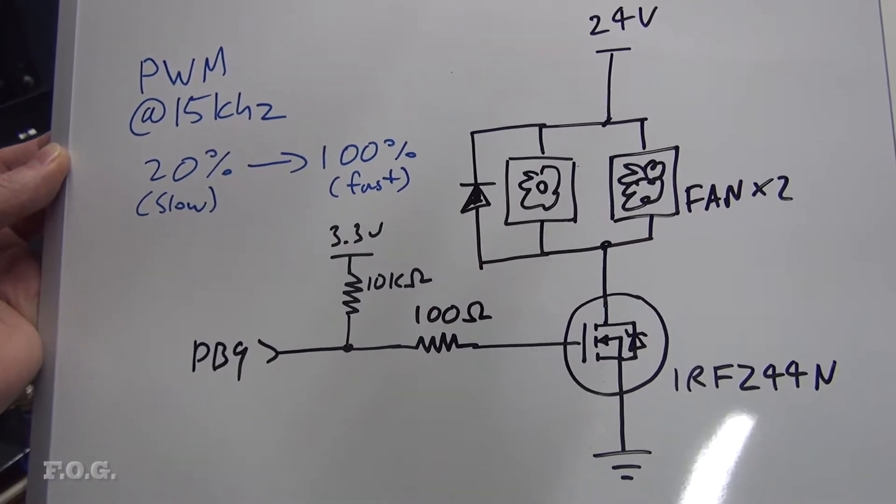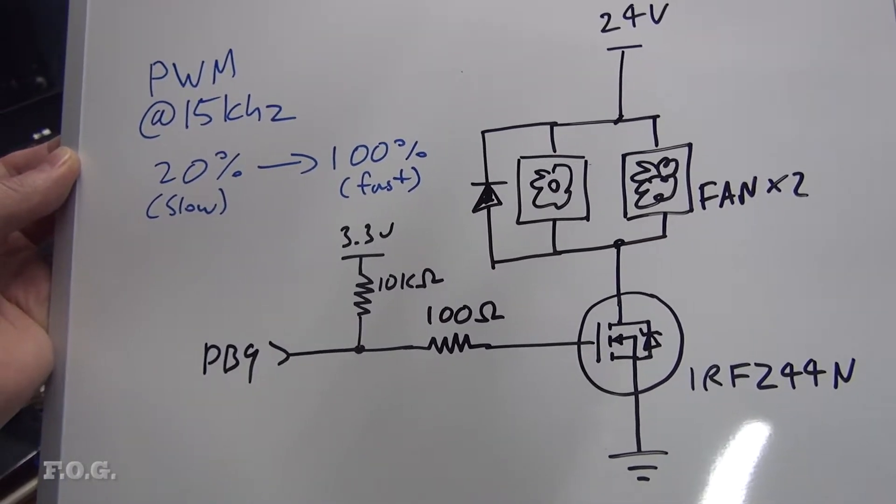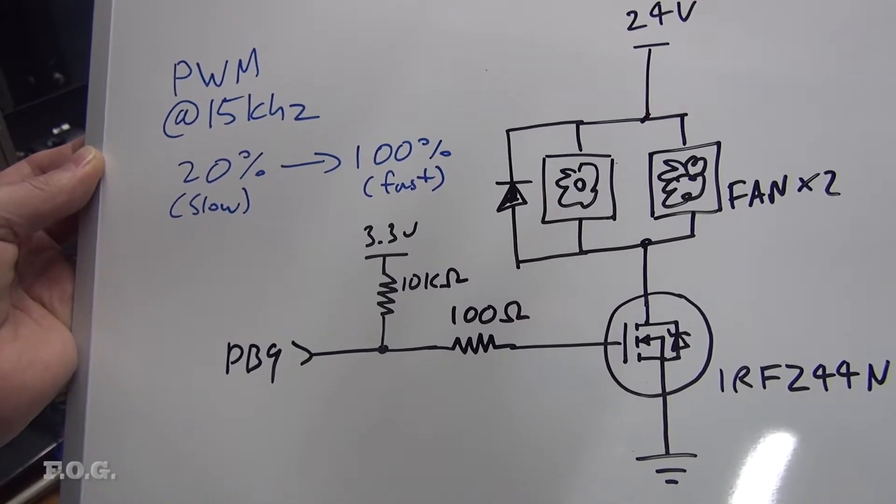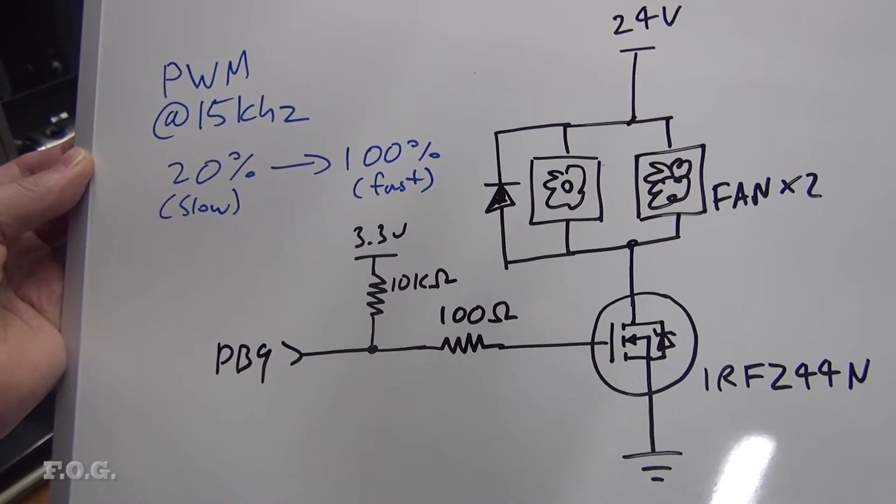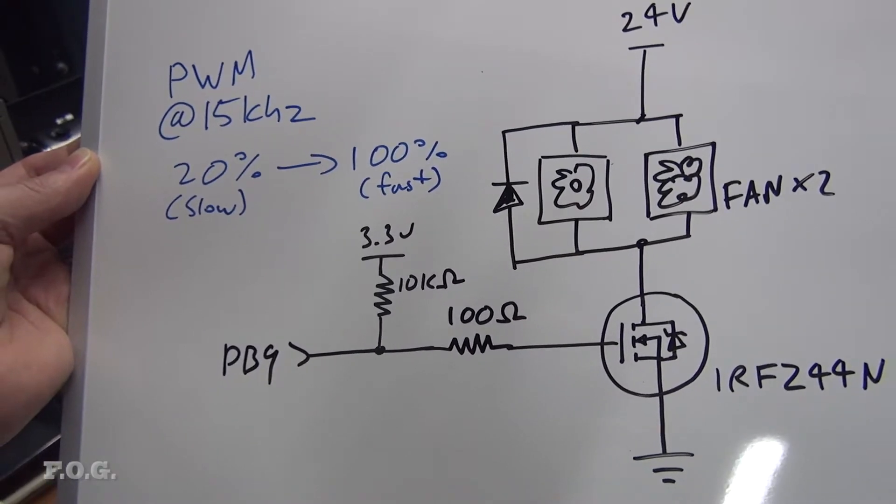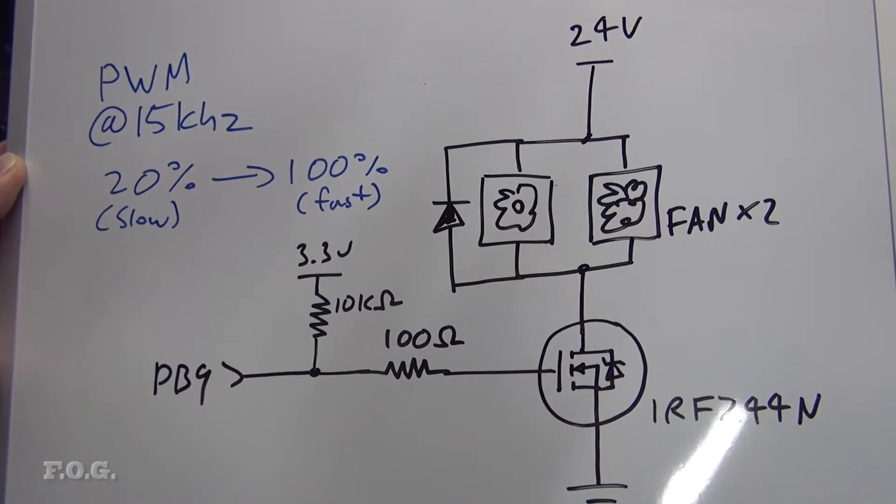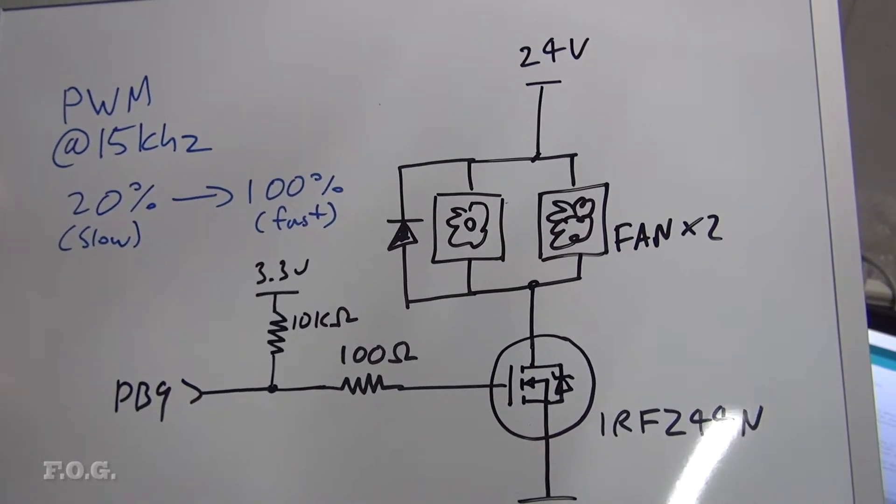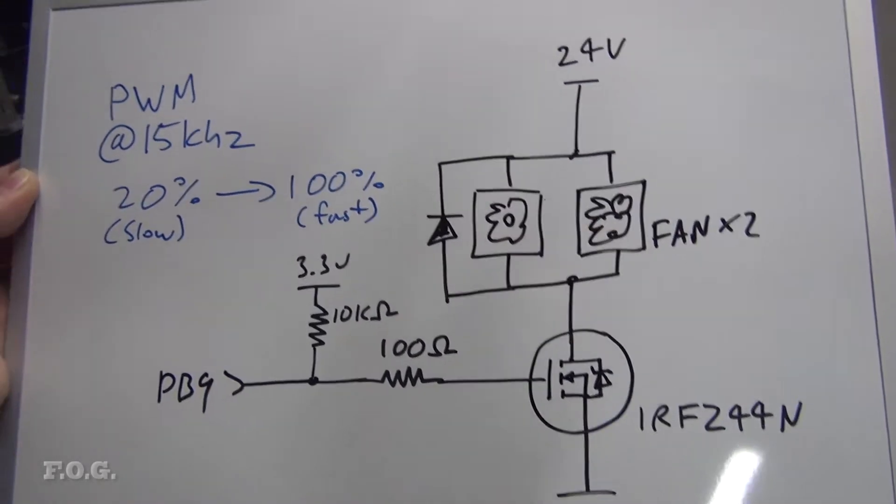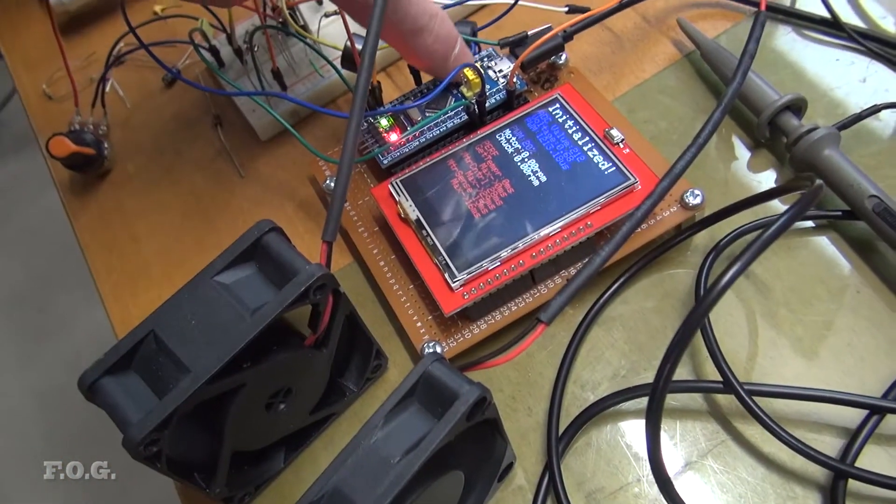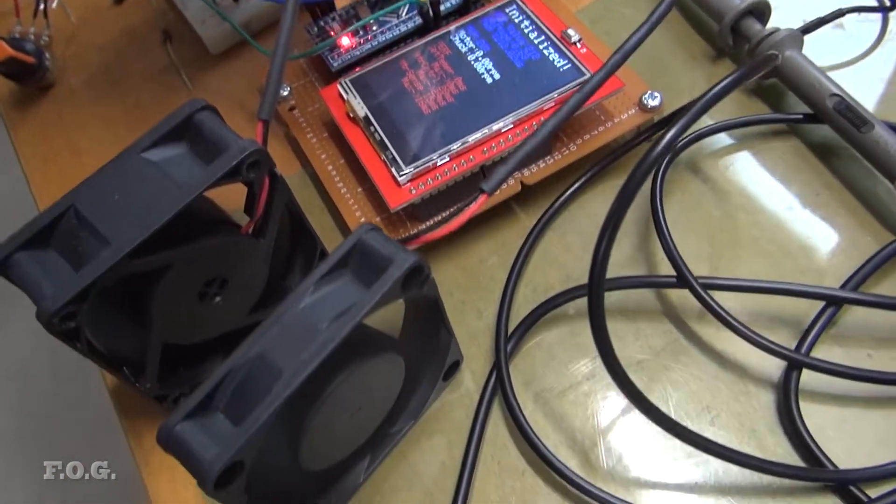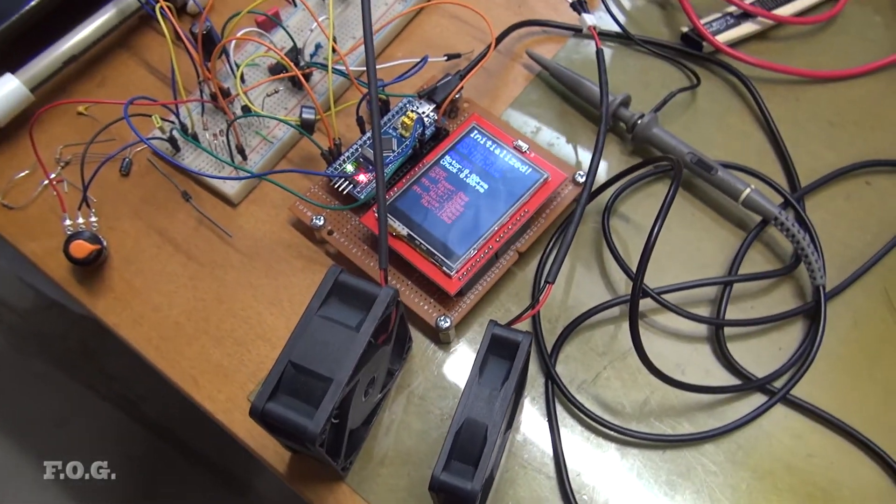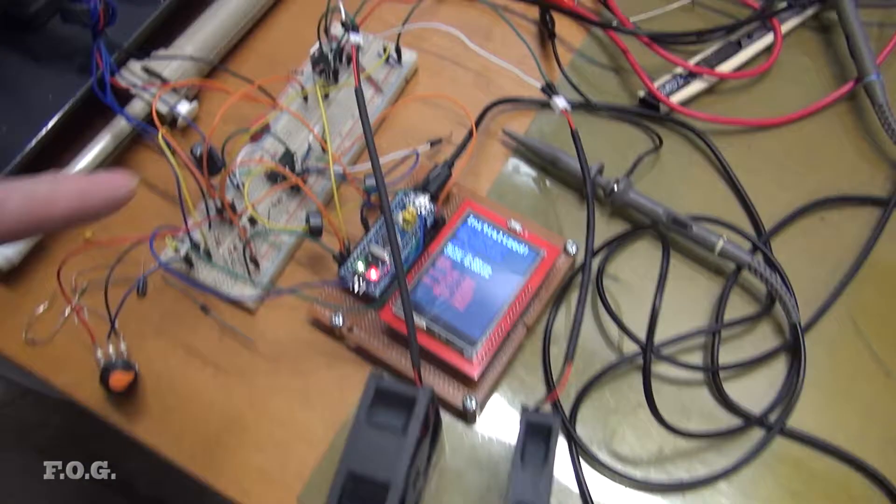I've defaulted it so there's a 3.3 volt pull up so that if the CPU is dead or not running or initializing the fan will go 100%. And as you can see we have that one MOSFET driving the two fans and to stop spurious currents coming back through being generated by the fans I have that protection diode on there as well. If I reset the processor here you'll see the fan boots up to 100% and then quickly as soon as it boots up it's back into normal speed.